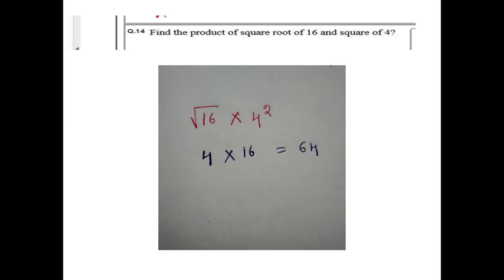Next question: Find the product of square root of 16 and square root of 4. Friends, it's very simple but can be confusing. Square root of 16 is 4, and square root of 4 is 2 — wait, 4 times 16 is 64. Actually, √16 = 4 and √4 = 2, so the product is 4 × 2 = 8. It's very simple.